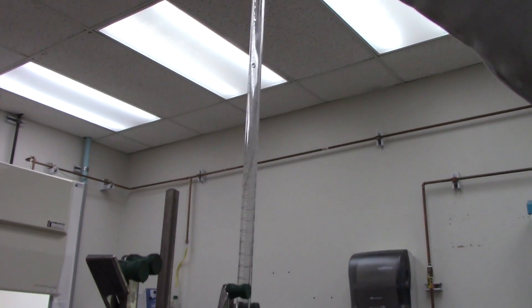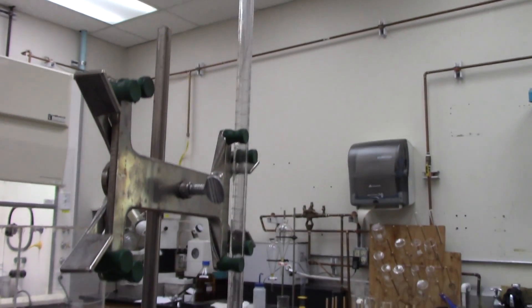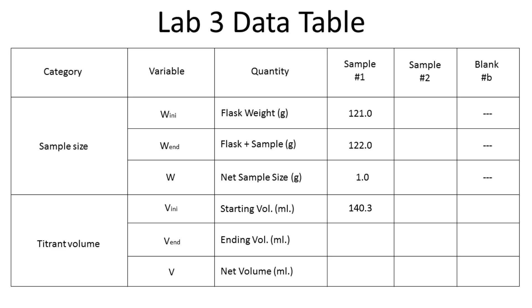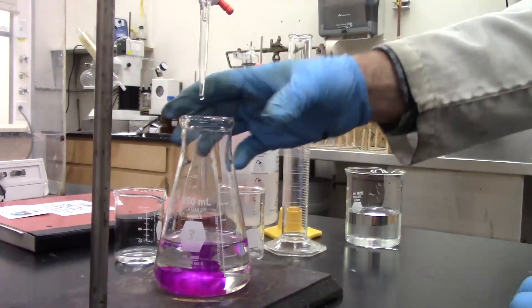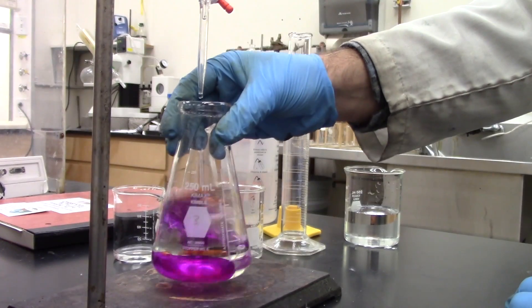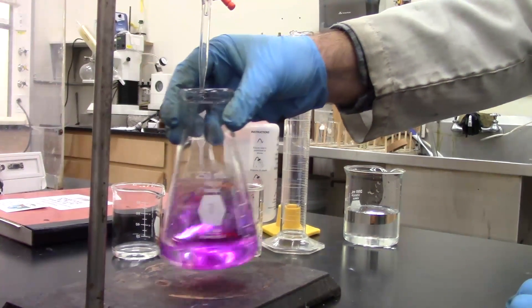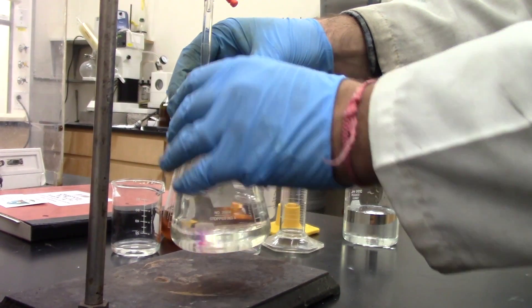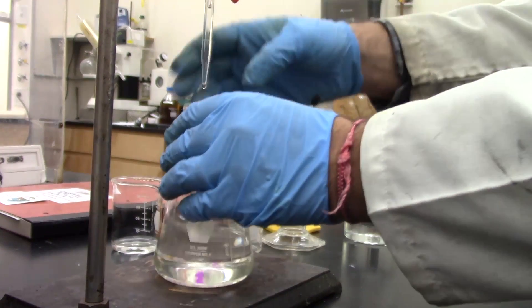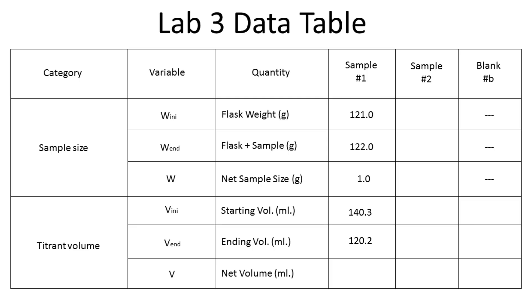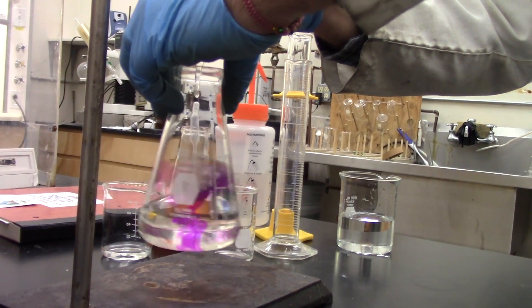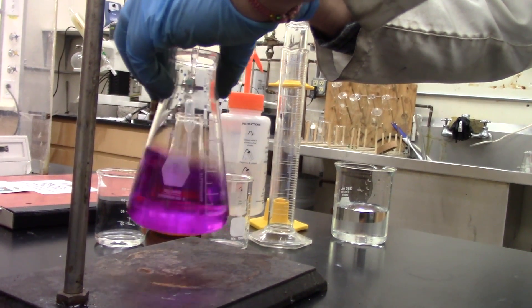Fill the burette with titration solution and record the starting volume of titrant on the data table. Carefully introduce the titrant from the burette into the flask while swirling the solution vigorously but without spattering. Stop adding titrant when the solution changes color to pink. Record the ending volume of titrant on the data table. Repeat the process for the second sample and the blank.